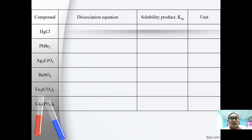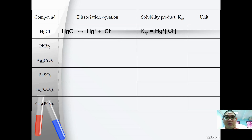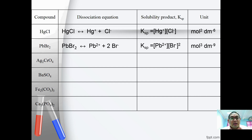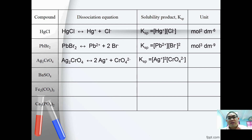For example: HCl → H⁺ + Cl⁻, KSP = [H⁺][Cl⁻], unit is mol² dm⁻⁶. PbBr₂ → Pb²⁺ + 2Br⁻, KSP = [Pb²⁺][Br⁻]², unit is mol³ dm⁻⁹. AgClO₄ → Ag⁺ + ClO₄⁻, KSP = [Ag⁺][ClO₄⁻], unit is the same as above.